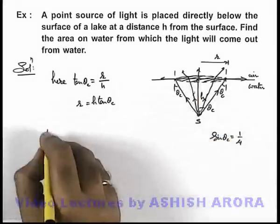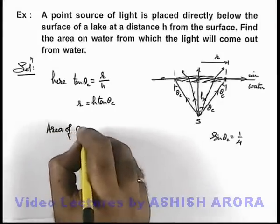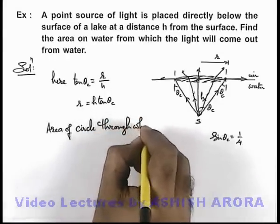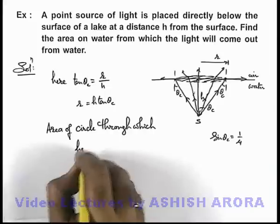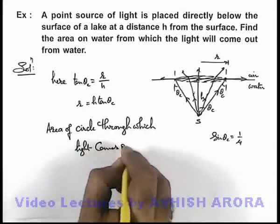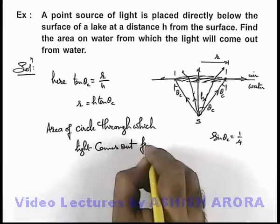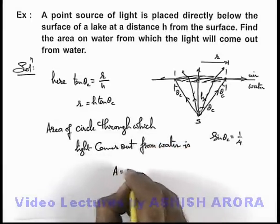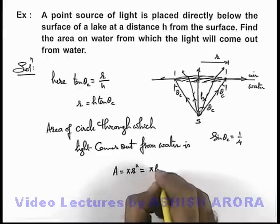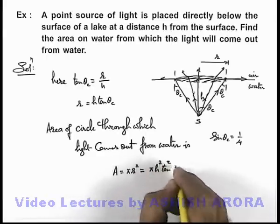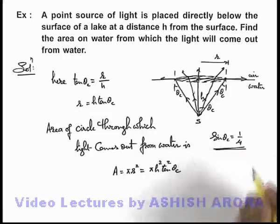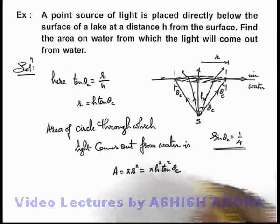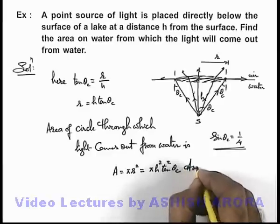So here the area of circle through which light comes out from water is, this can be written as pi r square, so this will be equal to pi h square tan square theta c, and the value of critical angle we can obtain from here, or directly we can substitute the value of tan theta c in terms of mu from this relation. So this will be the answer to this problem.